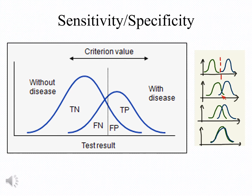As you can also realize from the slide, by selecting the appropriate cutoff, we can manipulate the sensitivity and specificity of the test. One thing to remember is that as we maximize sensitivity by reducing the cutoff, the specificity is reduced, and the opposite is also true. If we want to maximize specificity by moving the cutoff to the right, the sensitivity is reduced.